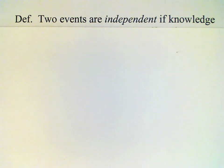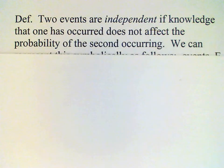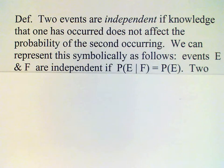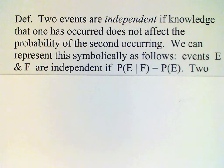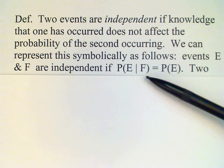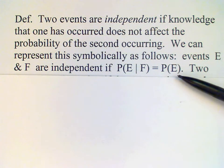We will say that two events are independent if knowledge that one of these events has occurred does not affect the probability of the other one occurring. We can indicate this in symbols: if we have the conditional probability of E given F equal to the probability of E,